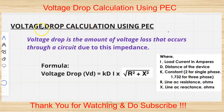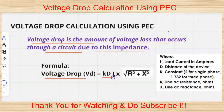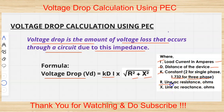The voltage drop calculation is the amount of voltage loss that occurs through a circuit due to impedance. We have the formula: Voltage Drop VD equals K times D times I multiplied by the square root of R squared plus X squared. Where I is load current in amperes, D is distance, K is a constant — 2 for single phase, 1.73 for 3 phase. R is the line resistance in ohms, and X is the line reactance in ohms.